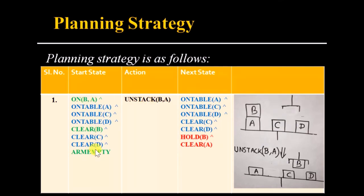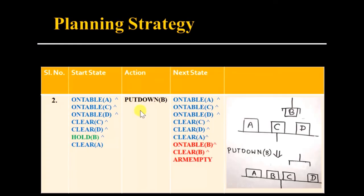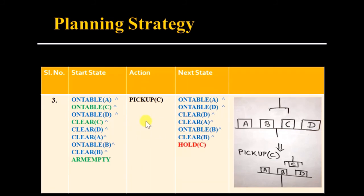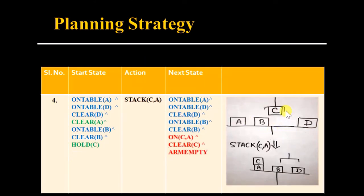We remove the preconditions and add the effects of Unstack into the next state. Next we perform Put-down(B) — Holding(B) is true, so we add the effects to the next state and remove Holding(B). Then Pick-up(C) — the precondition is true and the effect is Holding(C). Then we put C on block A by performing Stack(C,A) — the precondition is again true, and we apply the effect to the next state.